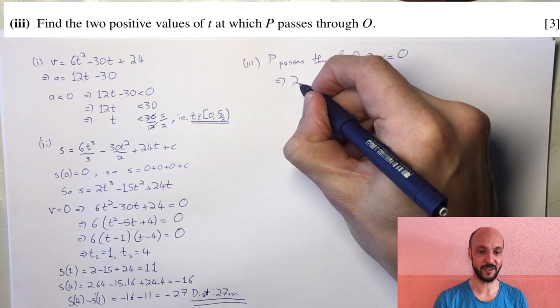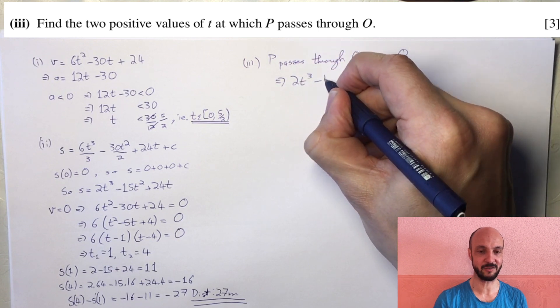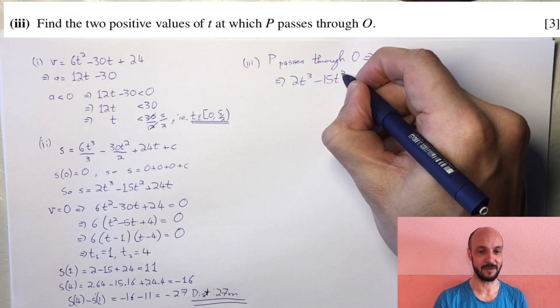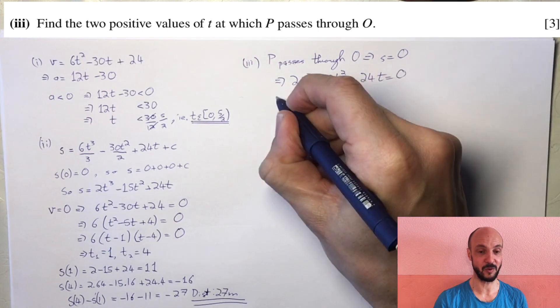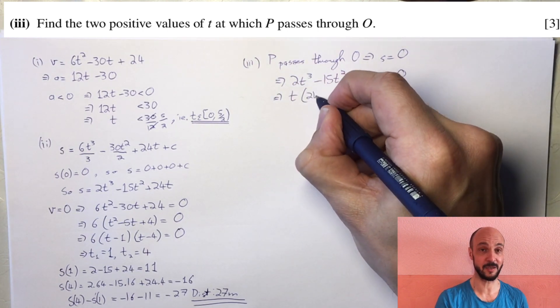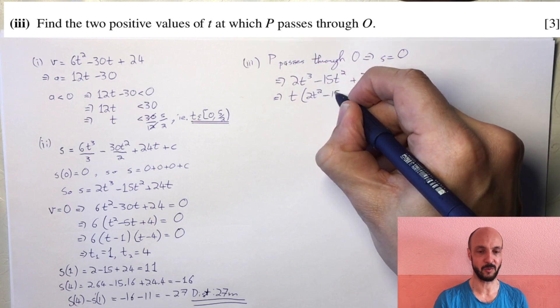We can factor out t to give t times 2t squared minus 15t plus 24 equals 0. So we have t equals 0 and the two solutions to the quadratic.